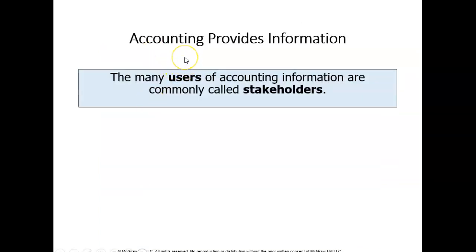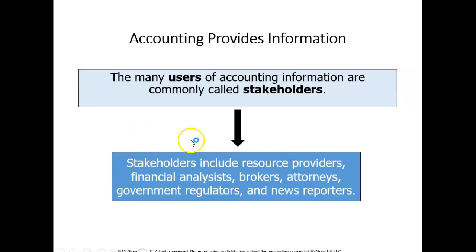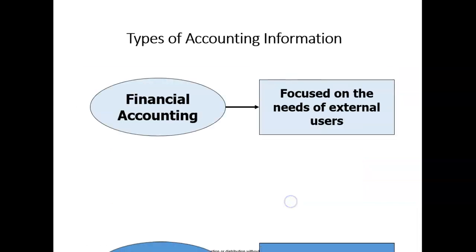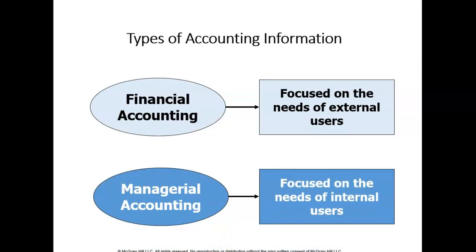Accounting also provides information to those who are called stakeholders. Stakeholders are any individuals who have an interest in the financial information of a business. If you want to make a decision about a company, you are considered a stakeholder. Stakeholders include resource providers such as investors, financial analysts, brokers, attorneys, government regulators, news reporters, banks, and unions — all examples of stakeholders.